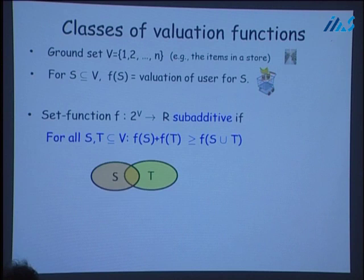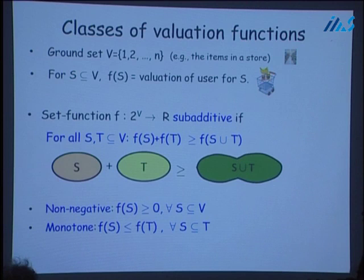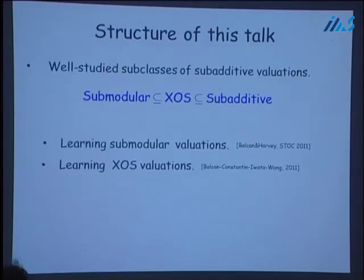Formally, a valuation function F is sub-additive if for all subsets S and T of the ground set, the value on the set S union T is upper bounded by the value of S plus the value of T. We'll only be considering valuation functions that are non-negative and also monotone — the buyer never minds having more items. More specifically, we'll be looking at two well-studied subclasses: submodular valuations and XOS valuations. It's well known that submodular evaluations is a subclass of XOS valuations, which in turn is a subclass of sub-additive evaluations.